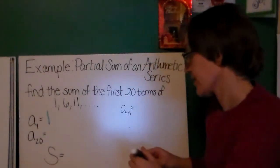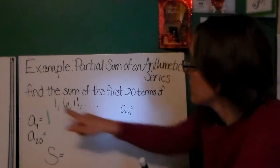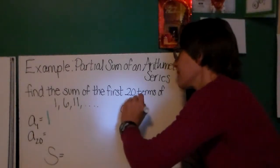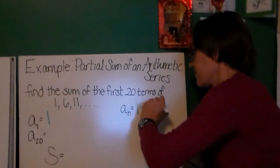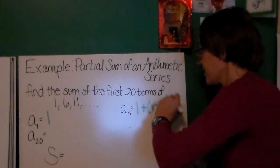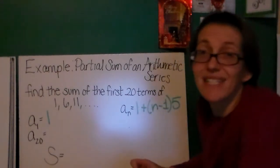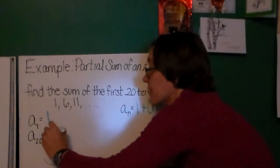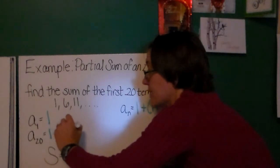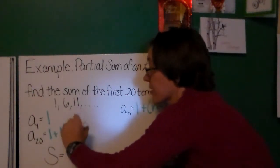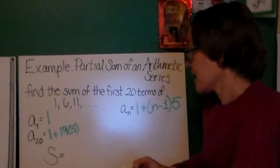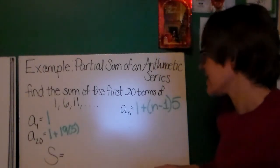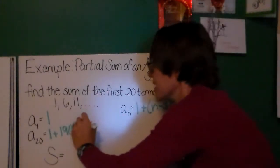But I do know what a1 is. A1 is 1. a sub n, this looks like it's going up by 5 each time. So, I can write my formula a sub n as 1 plus n minus 1 times 5. That's great because it will allow me to figure out what a sub 20 is. I'm just going to figure that out. 1 plus 19 times 5. And 19 times 5 is 95. So, this is going to be 96.